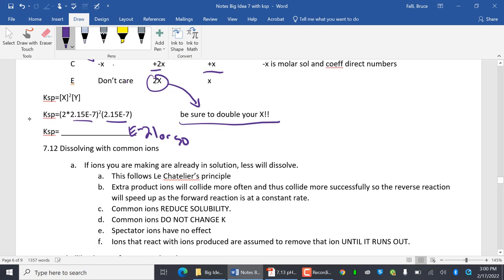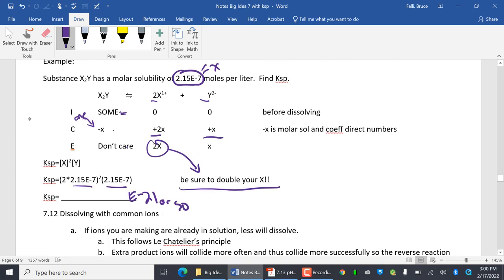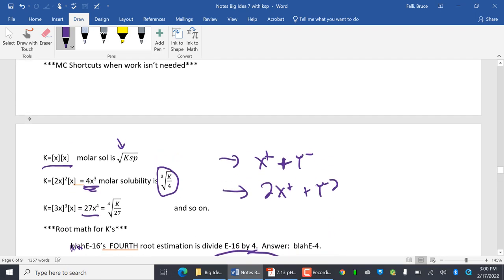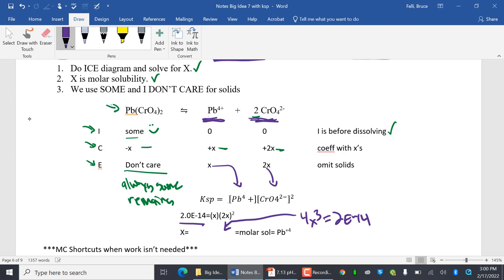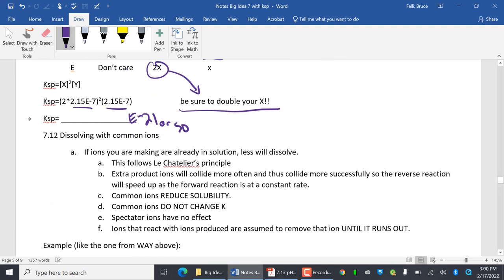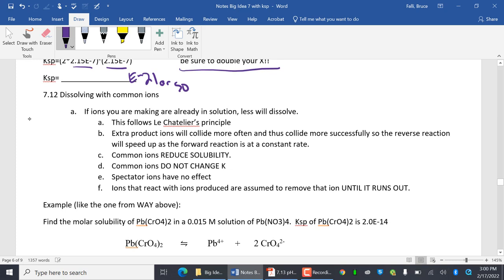Dissolving with common ions. If ions you are making are already in solution. So do you see how I'm making ions? I'm making X plus 1. I'm making Y minus 2. I'm making lead plus 4. I'm making chromate. There is in solution, less will dissolve. This follows Le Chatelier's principle. Just for the shifting.